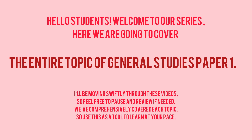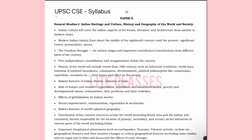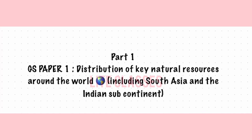Hello students, welcome to our series. We're going to cover the entire topic of General Studies Paper 1. I will be moving swiftly through these videos, so feel free to pause and review if needed. We have comprehensively covered each topic, so use this as a tool to learn at your own pace. Today we're going to cover a very important topic from the UPSC syllabus: distribution of key natural resources in the world including South Asia and the Indian subcontinent, and the factors responsible for the location of primary, secondary, and tertiary sector industries in various parts of the world including India.